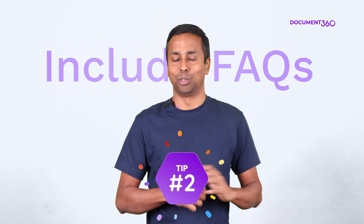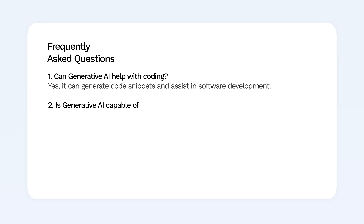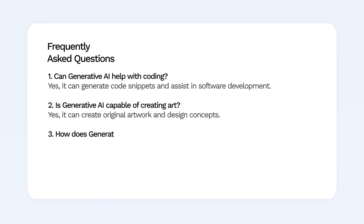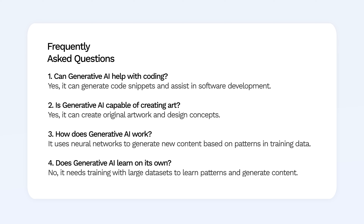Tip two: include FAQs. Creating FAQs and Q&A-style questions for each article is important to help Gen AI tools understand the nuances of your content. Source these kinds of questions from customer-facing teams and update these FAQs regularly.